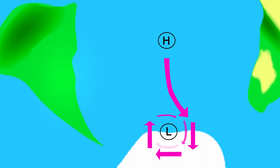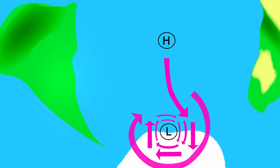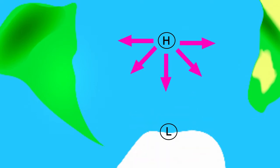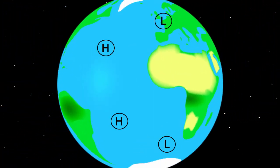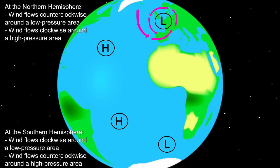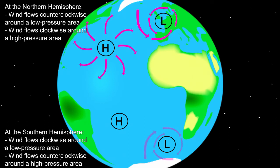In the southern hemisphere the air revolves around the low pressure area clockwise. For the wind around the high pressure area the situation is the other way around. The wind flows out of the high pressure area, gets a deviation to the left and thus flows counterclockwise, leaving the high pressure area. We can now say that in the northern hemisphere the wind around a low pressure area rotates counterclockwise and around the high pressure area clockwise. In the southern hemisphere the air revolves around a low pressure area clockwise and around a high pressure area counterclockwise.